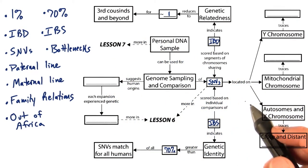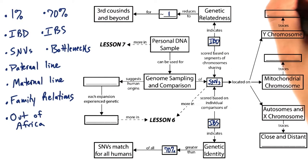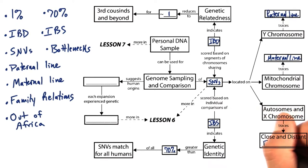Now all together the SNVs that we measure are located on the Y chromosome, which can be used to trace the paternal lineage. The mitochondrial chromosome, which is used to trace the maternal line. And autosomes in the X chromosome, which all together can be used to trace close and distant family relations.